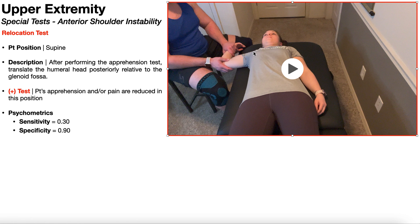In the apprehension test position — 90 degrees of shoulder abduction, 90 degrees of elbow flexion, forearm supinated, shoulder in external rotation — suppose the patient reported apprehension, fear of subluxation, or familiar shoulder pain at a particular point in external rotation. We hold that exact position. Then a posterior force is applied to the humeral head, translating it posteriorly relative to the glenoid fossa. This is done because anterior shoulder instability causes excessive anterior translation of the humeral head during external rotation, which creates the fear of subluxation. Applying that posterior force puts the humeral head back toward its normal position, which should reduce the patient's apprehension and/or pain.